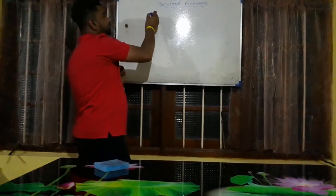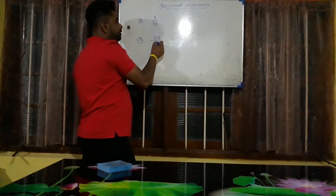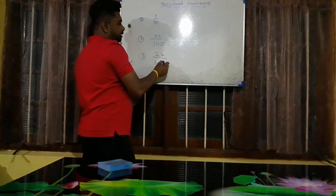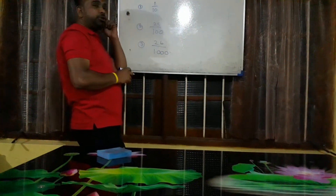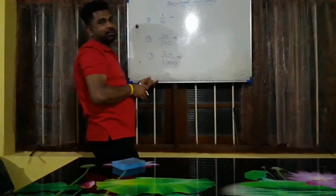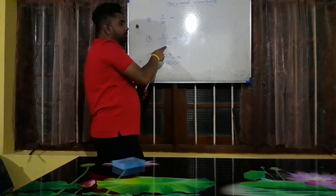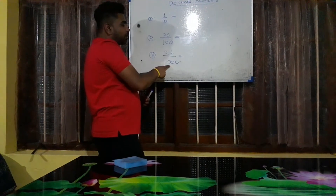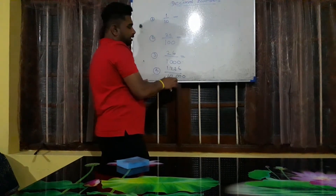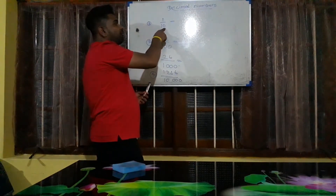You are given fractions: 1 over 10, 25 upon 100, and 26 upon 1000. How to convert these fractions into decimal? Remember: in 10 there is one zero, in 100 there are two zeros, in 1000 there are three zeros, in 10,000 there are four zeros. This is a shortcut — the number of zeros tells you how many places the decimal point jumps forward.